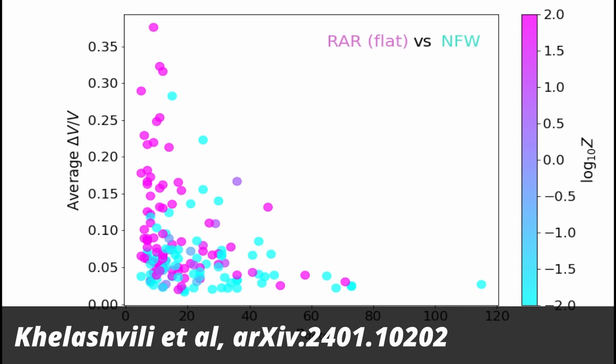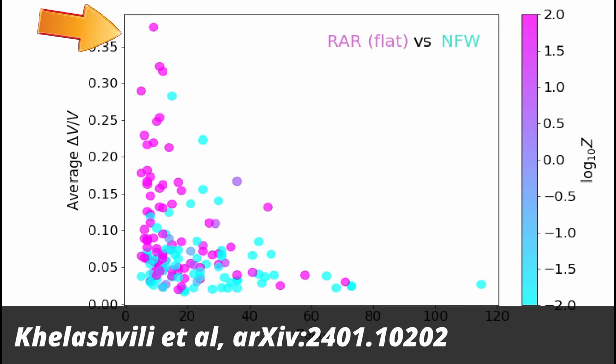Even more worrying, the galaxies for which MOND works better are those for which there are few data points or the data points have large uncertainties. In this figure, the vertical axis is a measure for the uncertainty of the data, and you can see that the higher the uncertainty, the more magenta points — those are the galaxies better fit with MOND. This makes it seem like MOND is preferred for cases in which there's little data to fit, just because MOND has fewer parameters. It looks like MOND is just an artifact of statistical analysis.